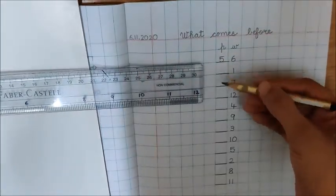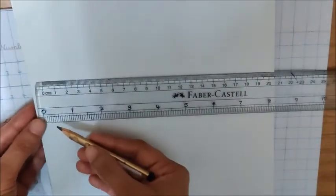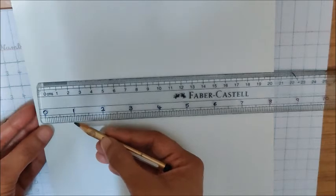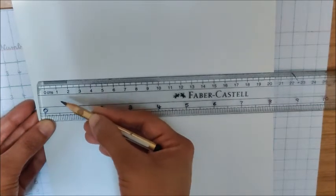Next, number is 1. What comes before 1? Check your number line. Where is 1? It's here. What comes before 1, children? 1 se pehle kaun sa number hai?